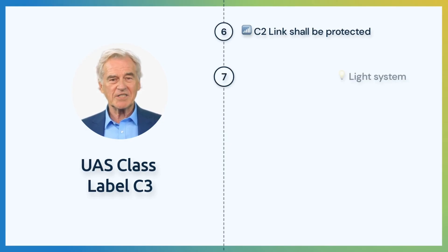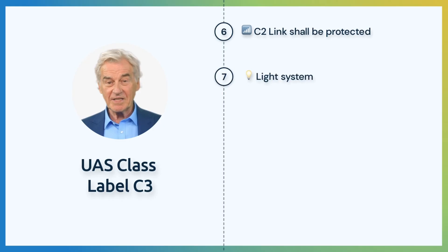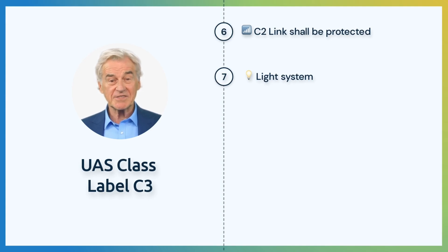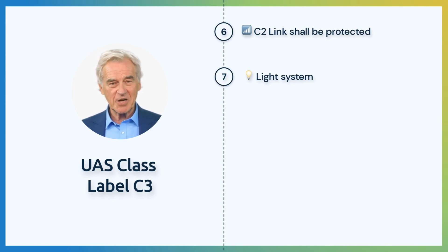The UA shall be equipped with a light system that ensures the control of the aircraft from the ground during the night. The control lights shall comply with aviation standards. The visibility lights shall be intermittent and green.